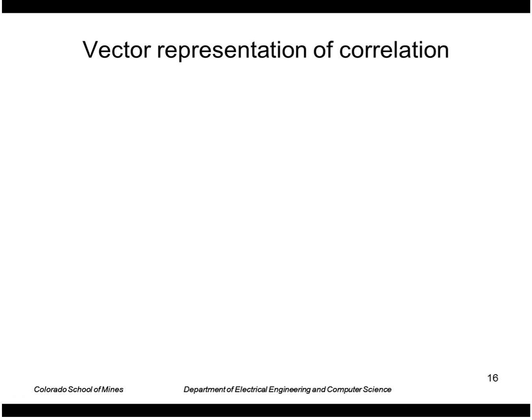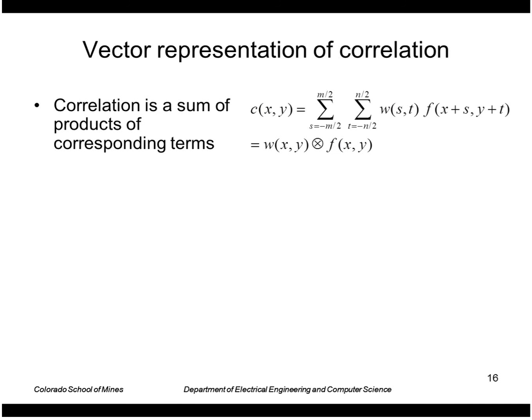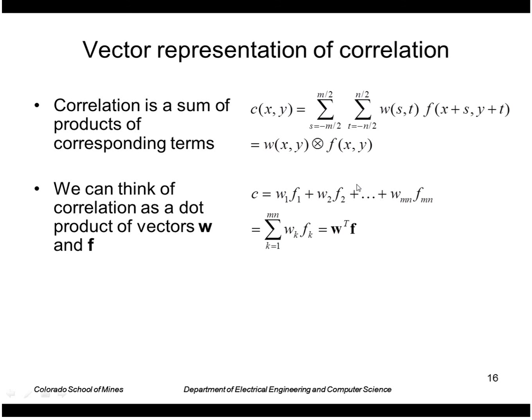Let's look at a very useful technique now: normalized cross correlation. First of all let's think of correlation. We've already seen the sum of products of the mask values times the image values. You could also think of this as a dot product of two vectors. I have a vector w and a vector f and I'm taking term by term products and adding them up. The values of f would be the values in the image at this current location of this mask.